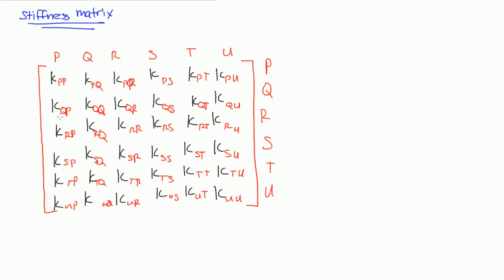This matrix is called the stiffness matrix — I'll write it as K for element I. This matrix has a few interesting properties. Notice that here on the diagonal, all the subscripts are the same: PP, QQ, RR, SS, TT, UU. This diagonal is called the main diagonal.